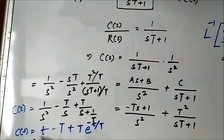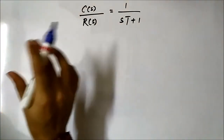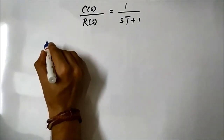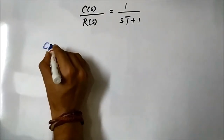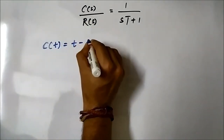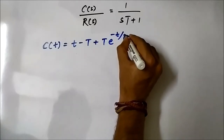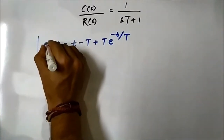So the output response for a first order system to unit ramp input is: c(t) = t - T + T·e^(-t/T). This is the expression for the output in the time domain.